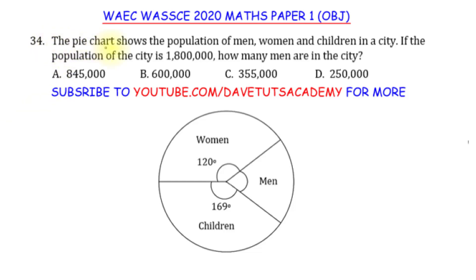In this question we're told that the pie chart shows the population of men, women and children in a city. Now if the population of the city — the total — is 1.8 million, we need to find how many men are living in that particular city. We can see the pie chart and there are quite a number of ways you can go about it, but this is what I want to do.